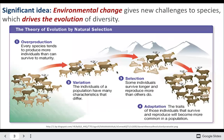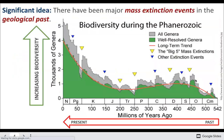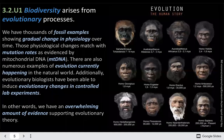Environmental change gives new challenges to species, and that's really the driver of the evolution of diversity. A species overproduces — there are more individuals than needed, there's some variation amongst those individuals, some of them can survive better, and those better-adapted individuals tend to pass those traits on to their offspring. There have been mass extinction events in the history of the world — usually about five major mass extinctions — and many people say we are currently experiencing the sixth.